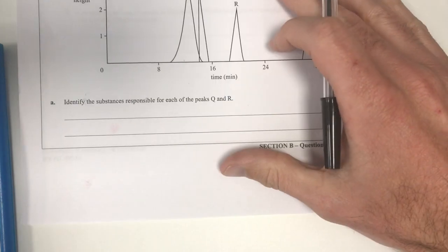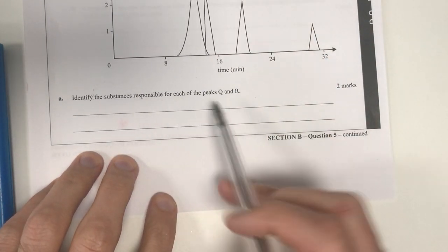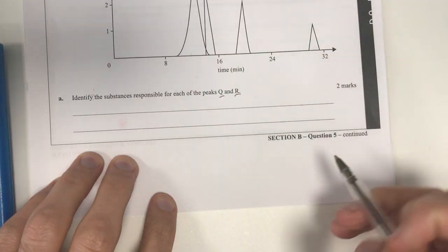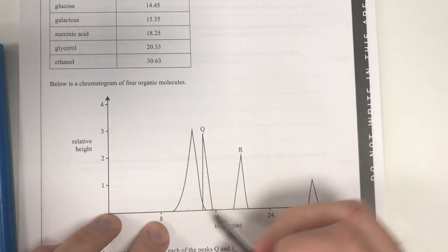Looking at this, we've got some information about HPLC. I'm just going to go straight to the question and work out what I need to know. So identify the substances responsible for each peaks Q and R. So I need to find out my retention time and match it up to the retention times in my list here.